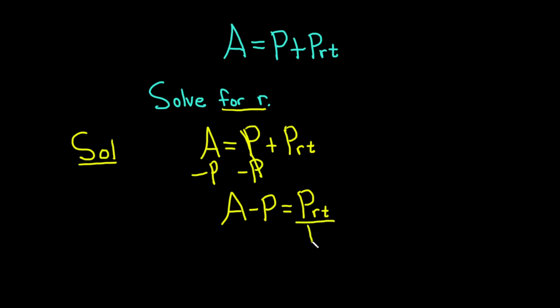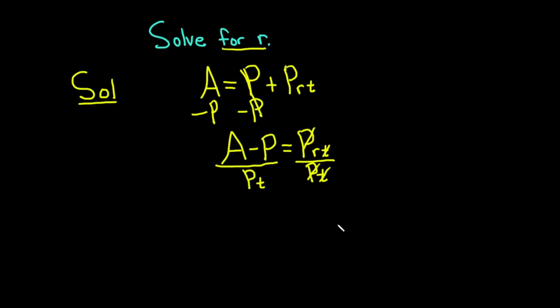What we can do now is we can get rid of this P and this T by dividing them away. So you can write a line and put the P and the T right below it like this. But what you do to one side, you do to the other. So you divide the entire left-hand side by PT. And these P's cancel, these T's cancel. On the left-hand side, we're left with A minus P over PT, and on the right-hand side, we're just left with a little r.